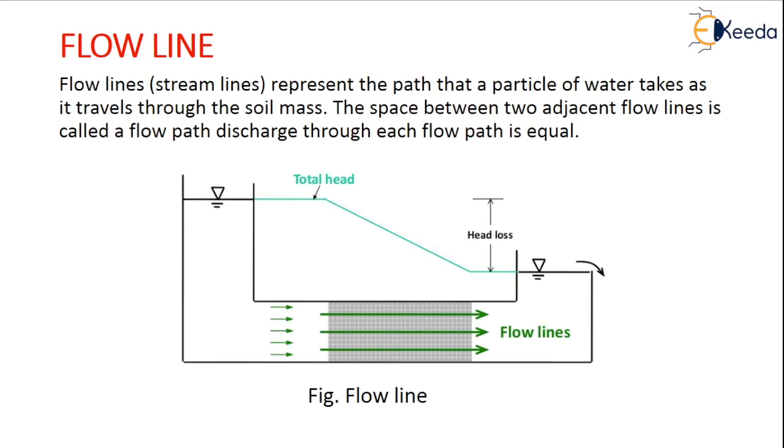What do you mean by flowline? Flowline is also known as streamline. It represents the path that a particle of water takes as it travels through the soil mass. See this is a path. The space between two adjacent flowlines is called a flow path.